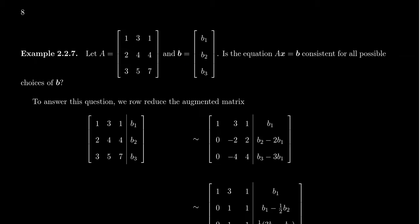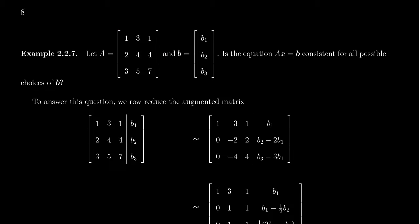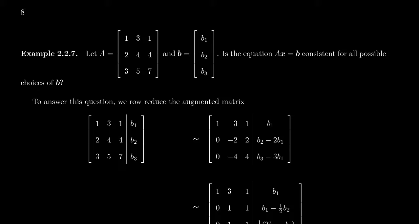In this example, I want to give you a method of determining what is in the column space and what is not, which generally shows us if vectors are in the span or not. So let's take a 3x3 matrix: 1, 3, 1, 2, 4, 4, 3, 5, 7. A matrix is really no different from a set of vectors — a matrix is just a list of column vectors. So we're going to decide: is the vector B inside the column space of A or not?